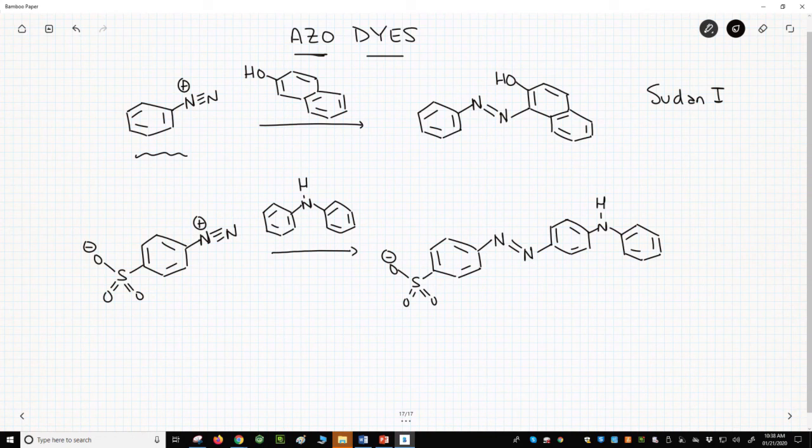The bottom one is acid orange 5, made from the reaction of diazonium benzene sulfonate with diphenyl amine. These molecules can be very large, and the ones we have seen are some of the lower molecular weight azo dyes.